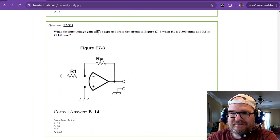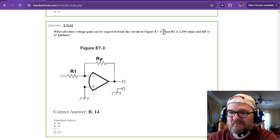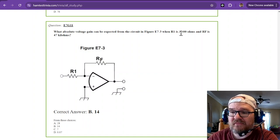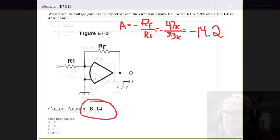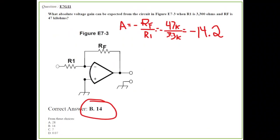What absolute voltage gain can be expected from the circuit in figure E7-3 when R1 is 3,300 ohms or 3.3K and RF is 47K? This is number 11. Same deal. RF over resistor 1 or RF over RI, you get 47K. You can see on this one, I didn't even write it on to the resistors anymore because I assume by this point you got it. RF is 47K. R1, I converted to kilohms. So, that's 3.3 kilohms. K divided by K is 1. So, you can drop the K, 47 divided by 3.3 gives you negative 14.2. Remember, because it's an inverting amp, op amp. But, the gain is 14. That's your correct answer.